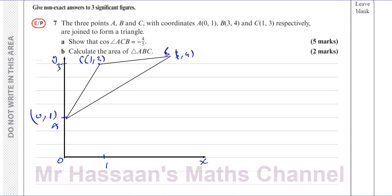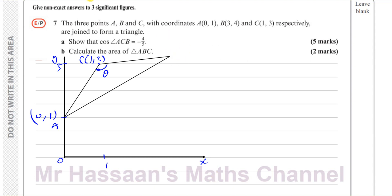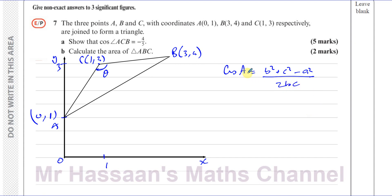We need to find the angle ACB, which is the angle at vertex C. Let's call this angle theta. We want to show that the cosine of this angle is minus 4 fifths. Since we have the coordinates of all three points, we can use the length formula and then the cosine rule to find an angle. The cosine rule states: cos A = (b² + c² − a²) / 2bc.